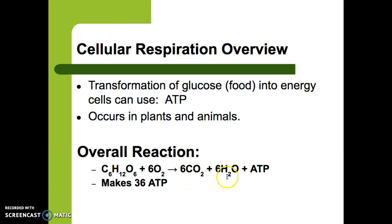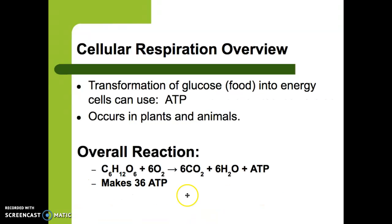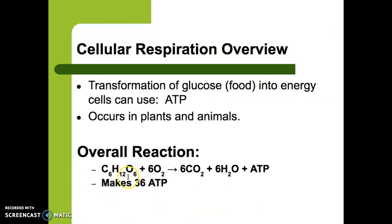If you look at the chemical equation for photosynthesis, carbon dioxide and water are on the left — plants need them. For cellular respiration, carbon dioxide and water are on the right — that's what gets made. It's a cycle: what gets made in cellular respiration gets used in photosynthesis, and what gets made in photosynthesis — glucose and oxygen — is what gets used in cellular respiration to make ATP. They are perfectly opposite of each other.